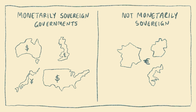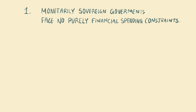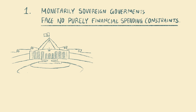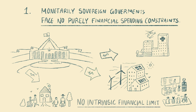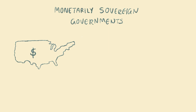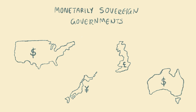No purely financial spending constraints means that a government which is in control of its own currency has no intrinsic financial limit to the amount of money it can invest in a budget — that's right, no intrinsic financial limit. At the moment, our federal government voluntarily imposes institutional constraints on its spending, but these in no way reflect the intrinsic spending capacity of the government. Monetarily sovereign national governments such as the USA, UK, Japan, and Australia have no limit to their ability to create and invest money, because they all issue their own currency.